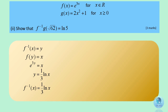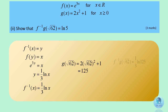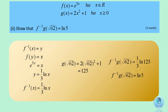Then find g of the square root of 62, which is 125. Next, substitute 125 into the inverse function of f, and you will get the final answer: natural log of 5.